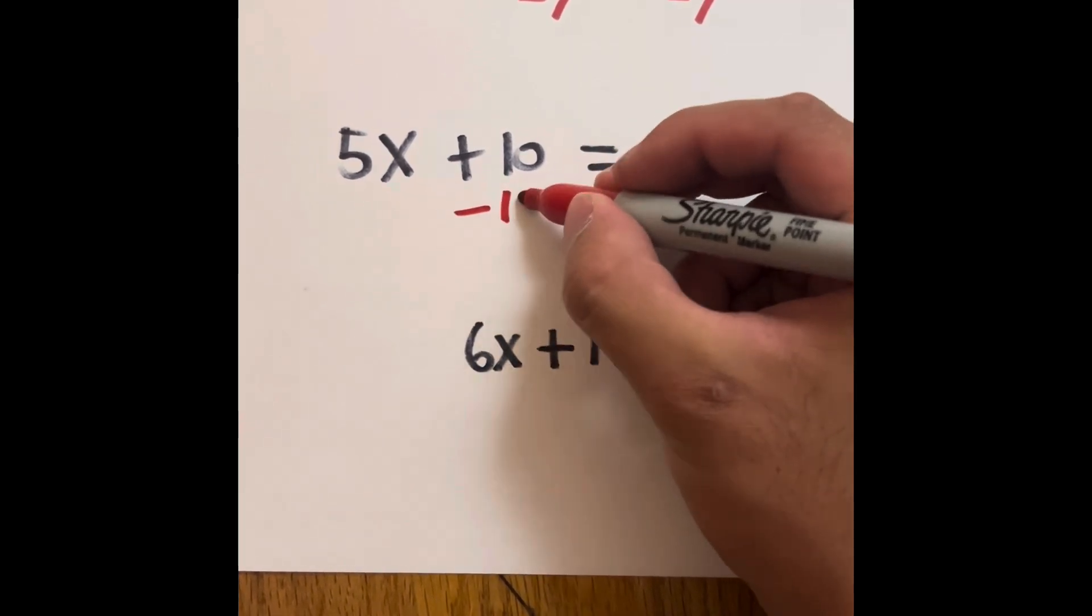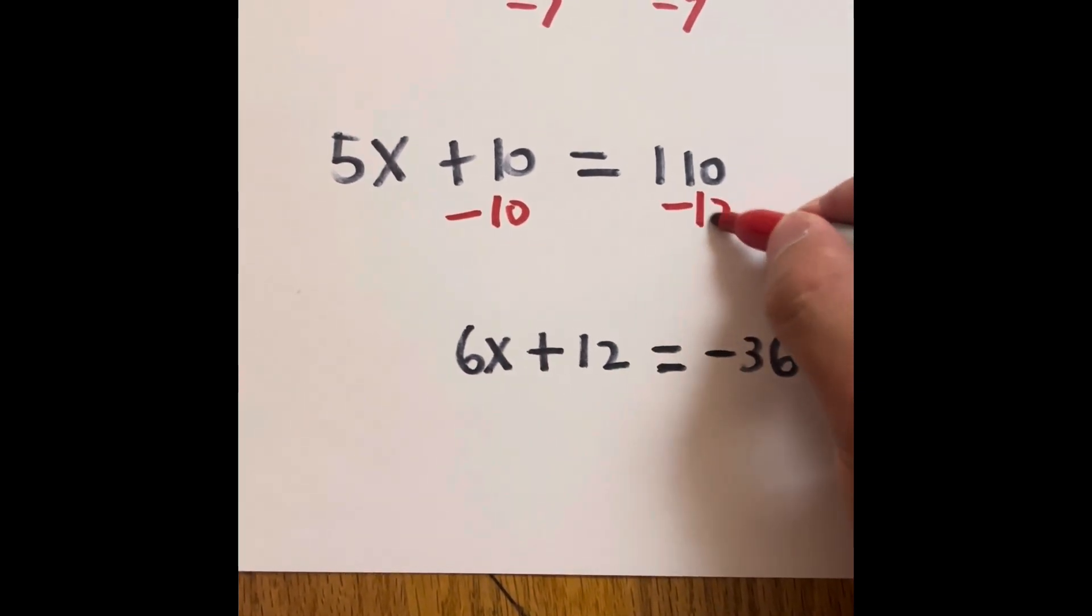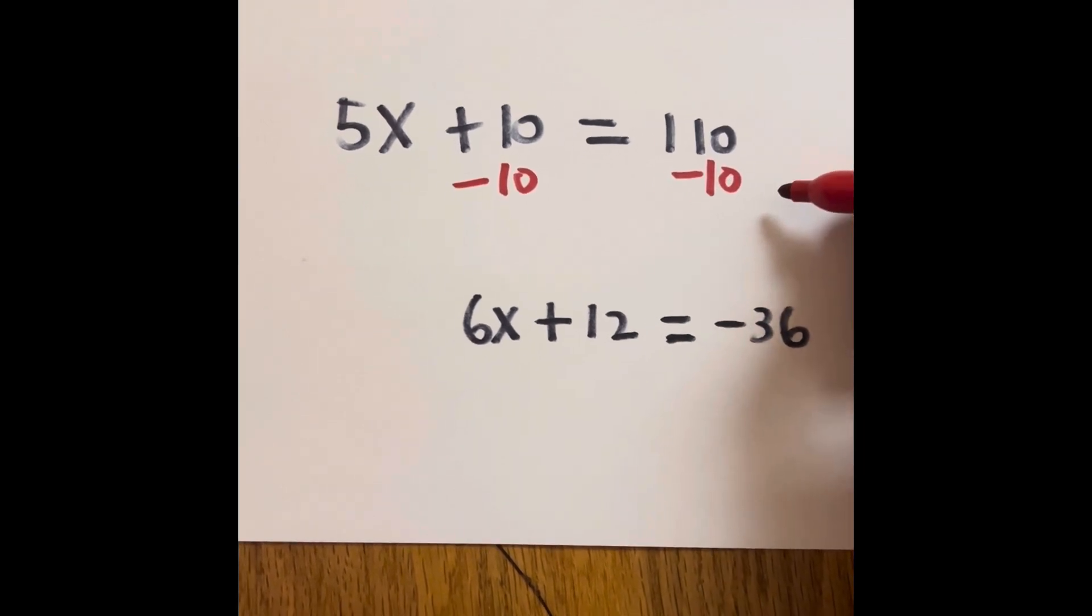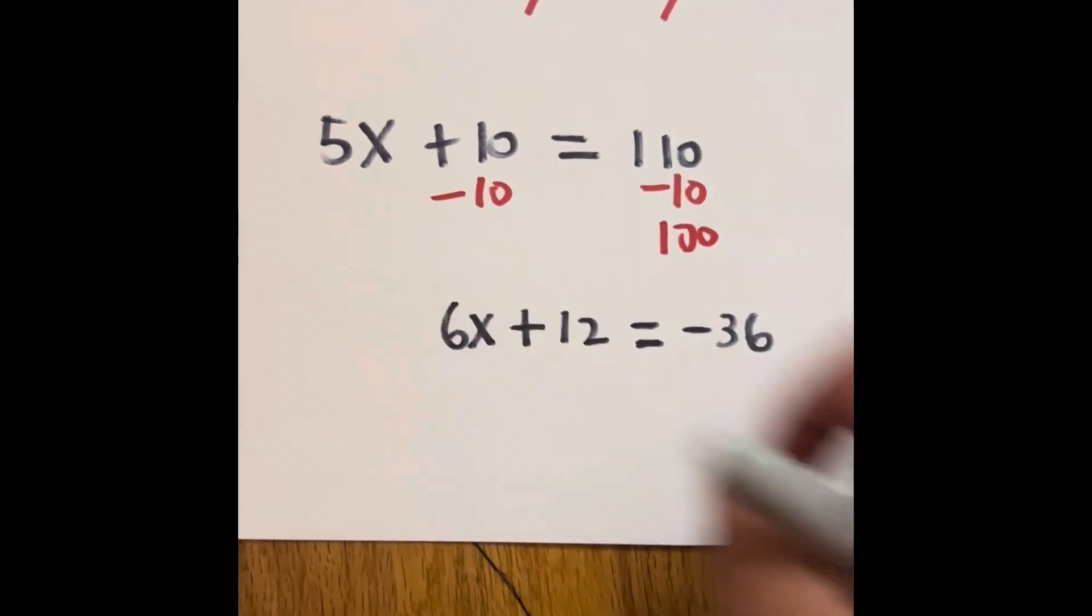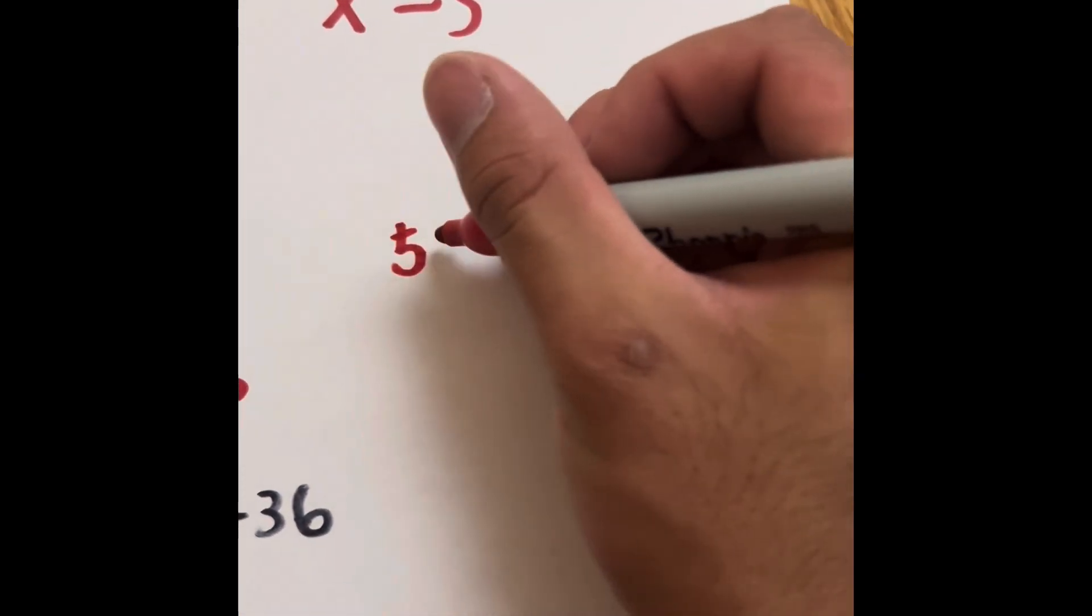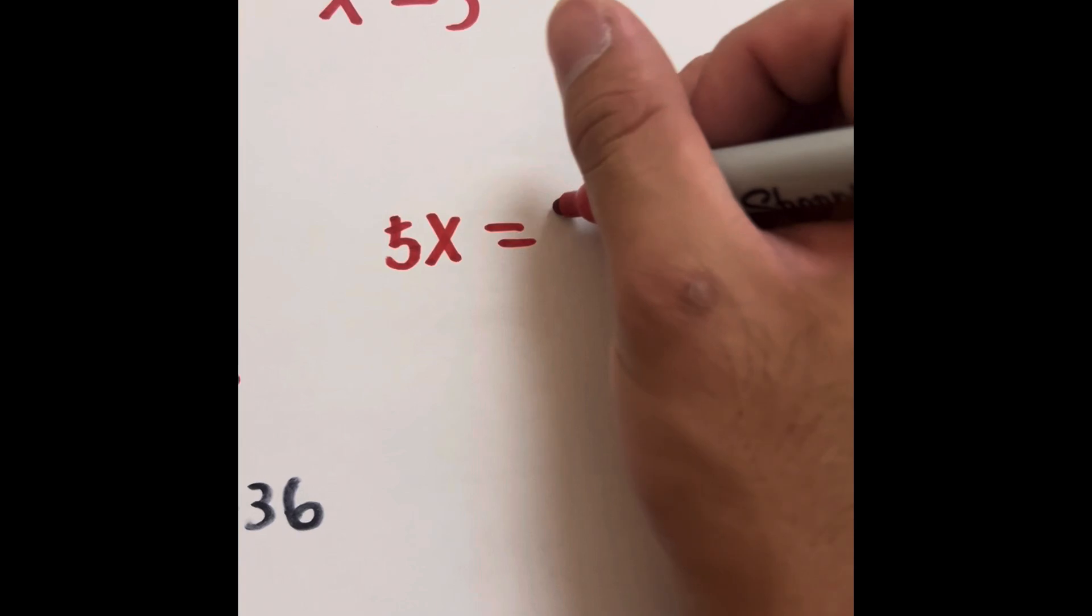Since we have add by 10, we can subtract by 10 and subtract this by 10. So 110 minus 10 is going to be 100, and we have 5x equals 100.